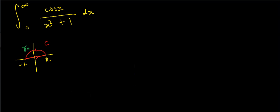In the last couple of videos, we looked at how to evaluate some basic integrals using the method of contour integration. With those previous examples, there was a variety of methods you could have used to tackle them, and contour integration, while very powerful, was something of an overkill when it came to integrals that could have been done with a simple trig substitution. I want to show you examples where it's almost a necessity. So in this case, I've got the integral from zero to infinity of cosine of x, all divided by x squared plus 1, dx.